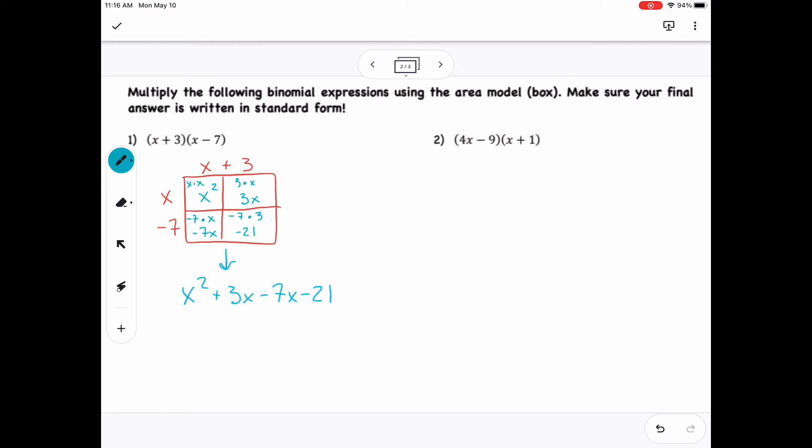And then the numbers meet up to multiply to get negative 21. So then I can pull them out of the box, and I notice that two terms are like, so I can add them together. 3x minus 7x would give me negative 4x. So x squared minus 4x minus 21 is my answer.